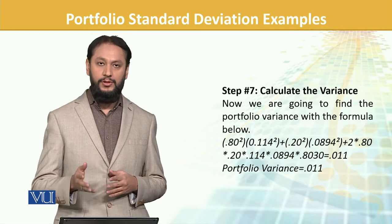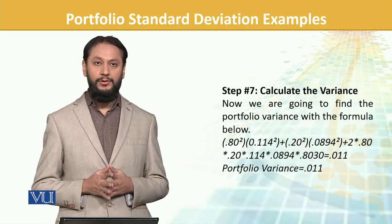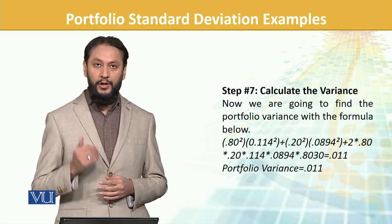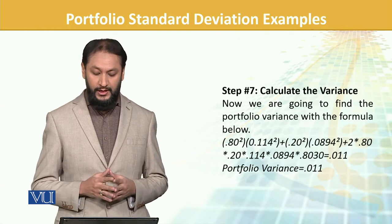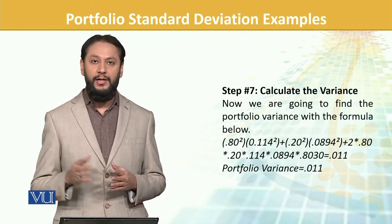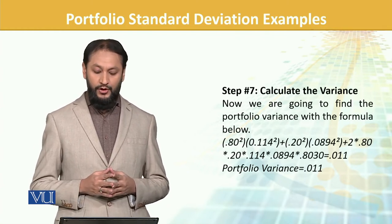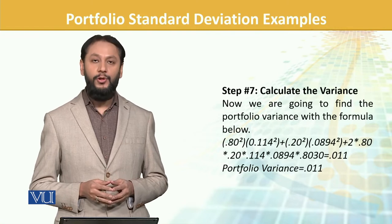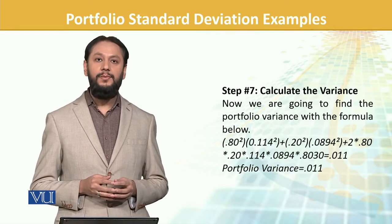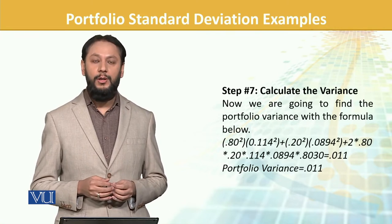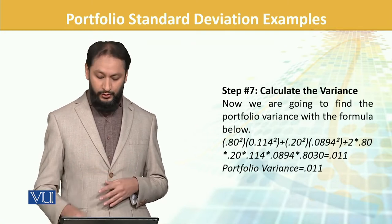We take 0.8 with its 11.4 standard deviation, and 0.2 with its respective standard deviation, and we multiply by the weights and the correlation. So our portfolio variance comes to 0.001, which is 11% variance.